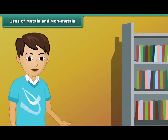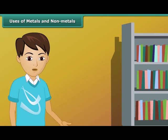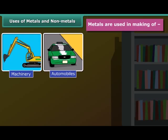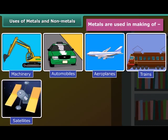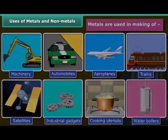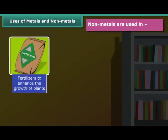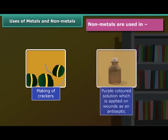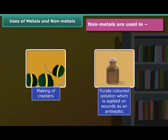Till now we have learnt the physical and chemical properties of metals and non-metals. Now let's move on to another important topic: what are the uses of these metals and non-metals? As metals are hard in nature, they are used in making machinery, automobiles, aeroplanes, trains, satellites, industrial gadgets, cooking utensils, water boilers, etc. Non-metals are not so hard, so they are used in fertilizers, water purification processes, life-supporting air, crackers, and purple-colored solution as an antiseptic on wounds.